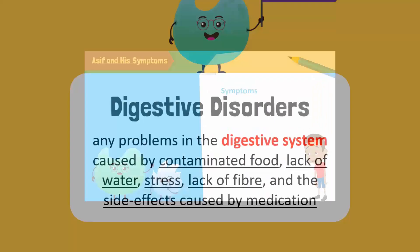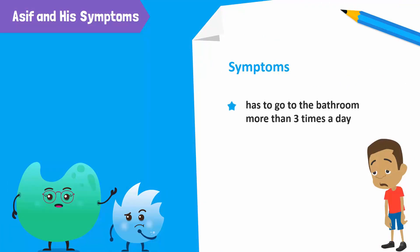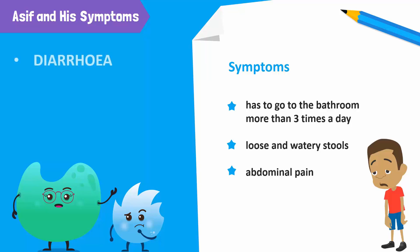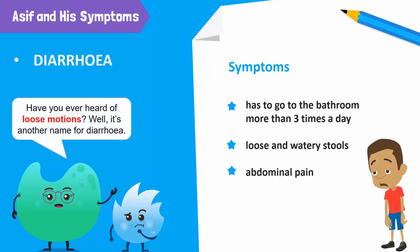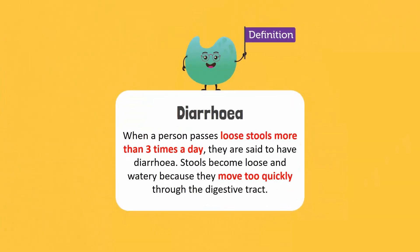Now, what did Asif say? He said that he had to go to the bathroom more than three times a day. His stools were loose and watery and he had abdominal pain. Asif has diarrhea. Have you ever heard of loose motions? It's another name for diarrhea. When a person passes loose stools more than three times a day, they are said to have diarrhea.